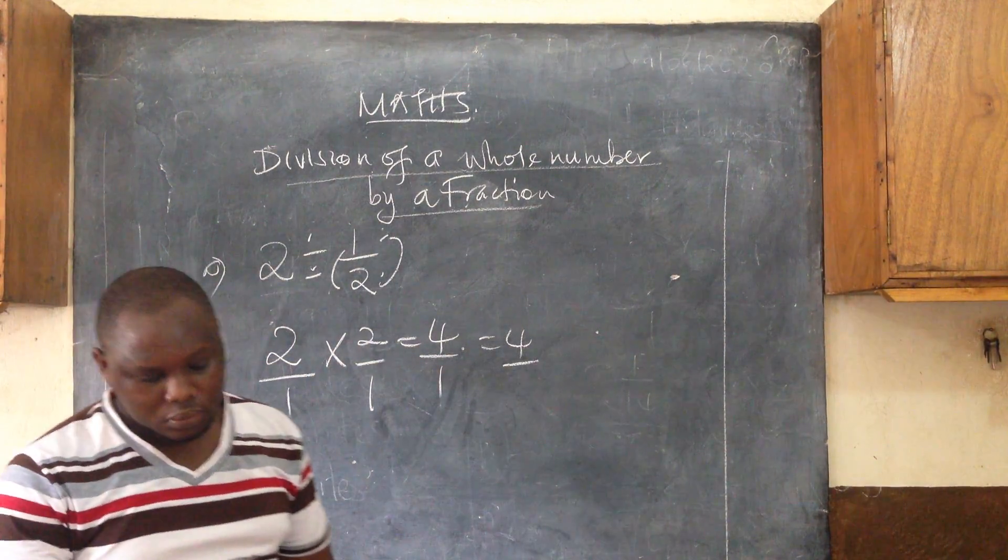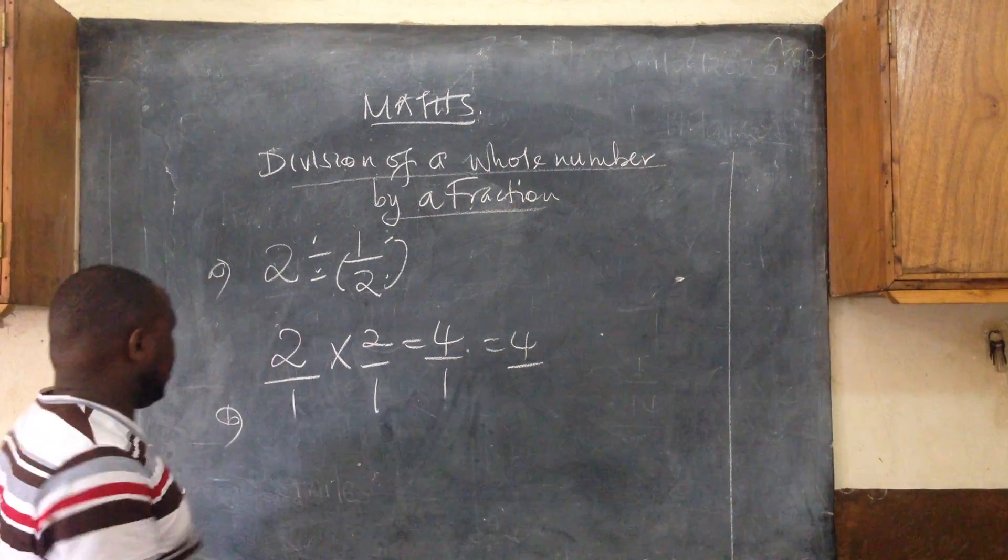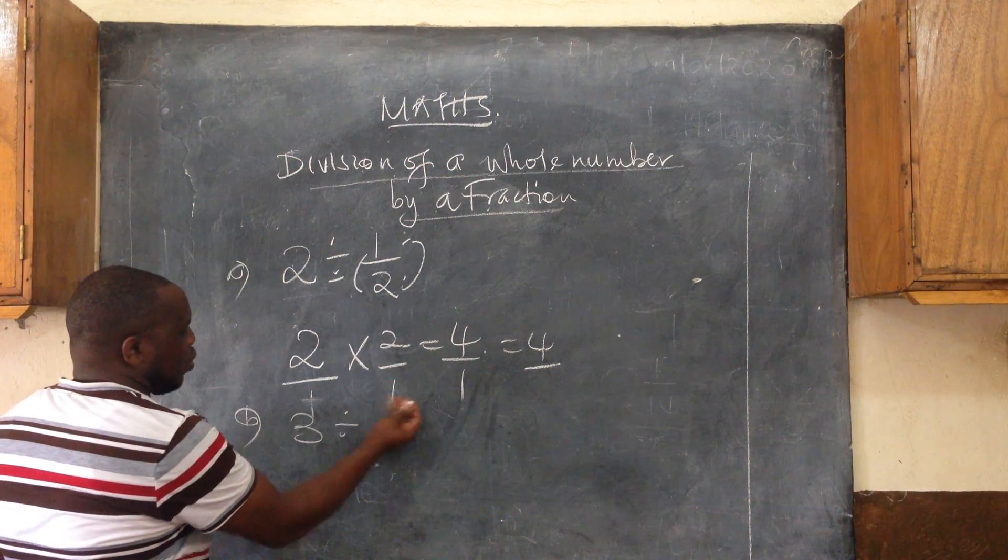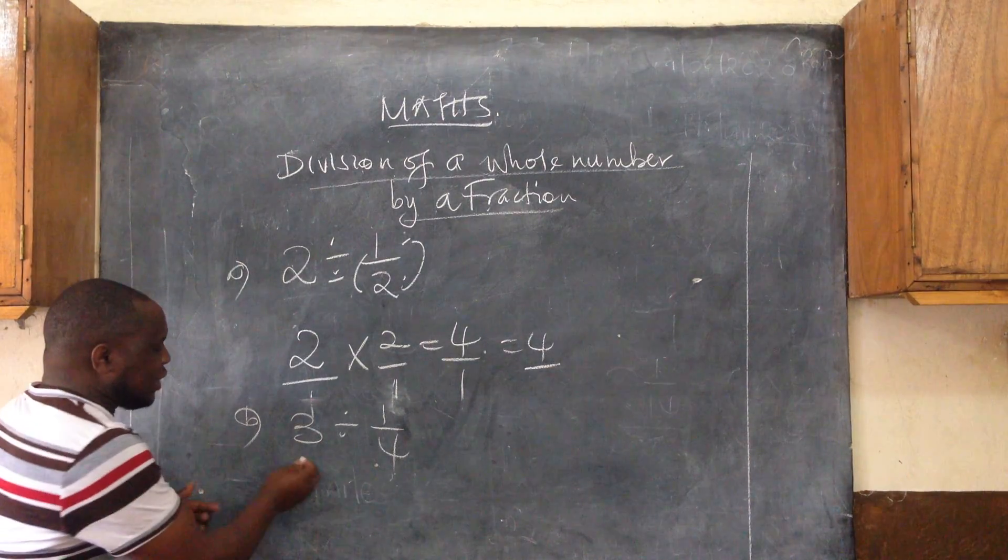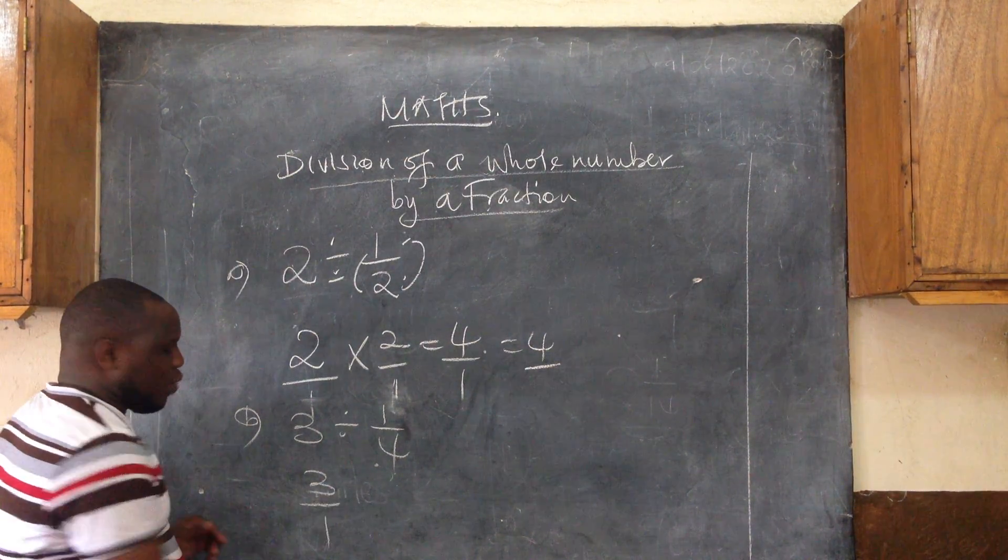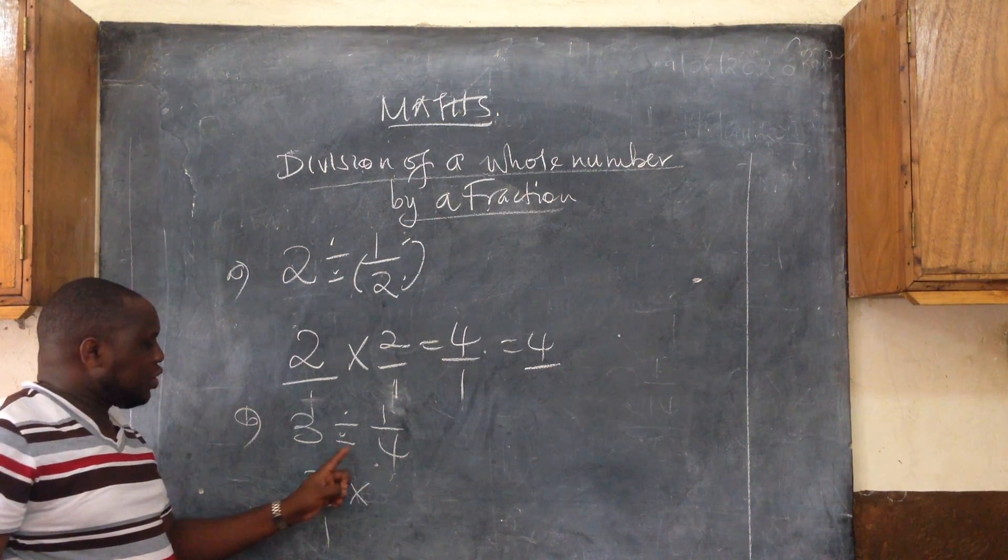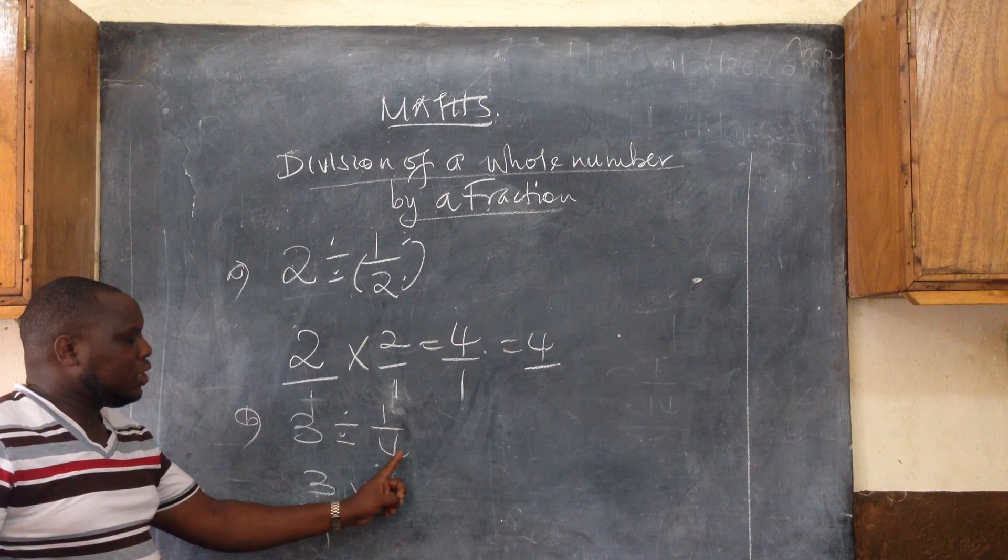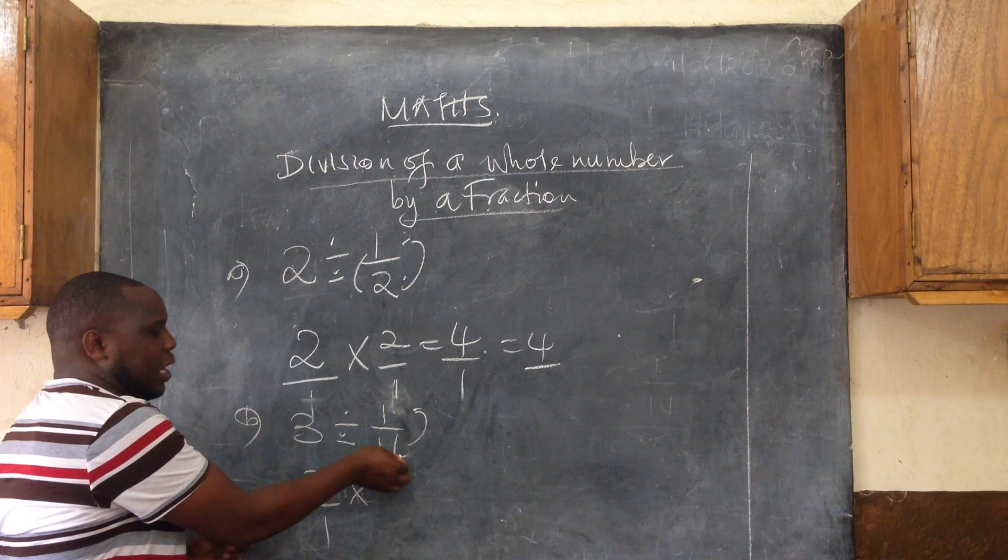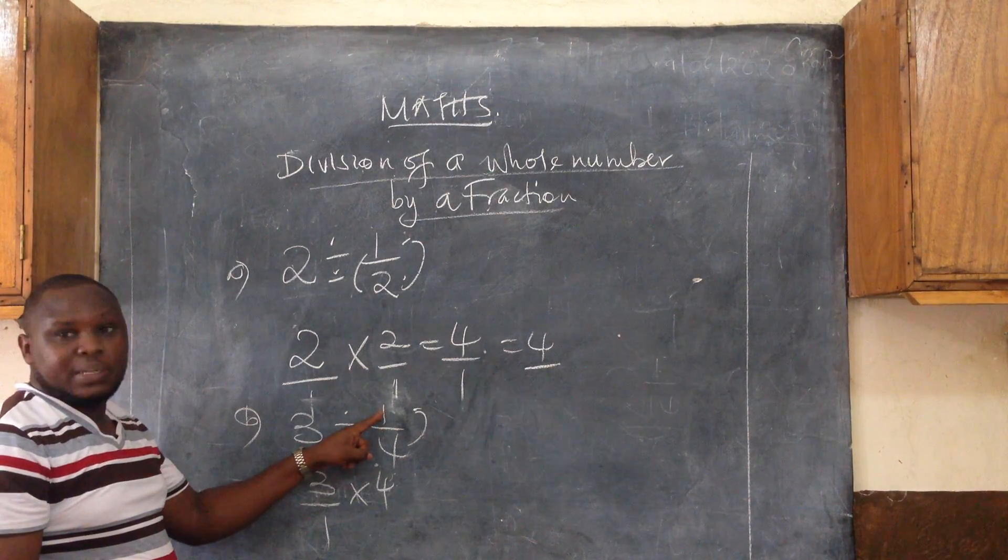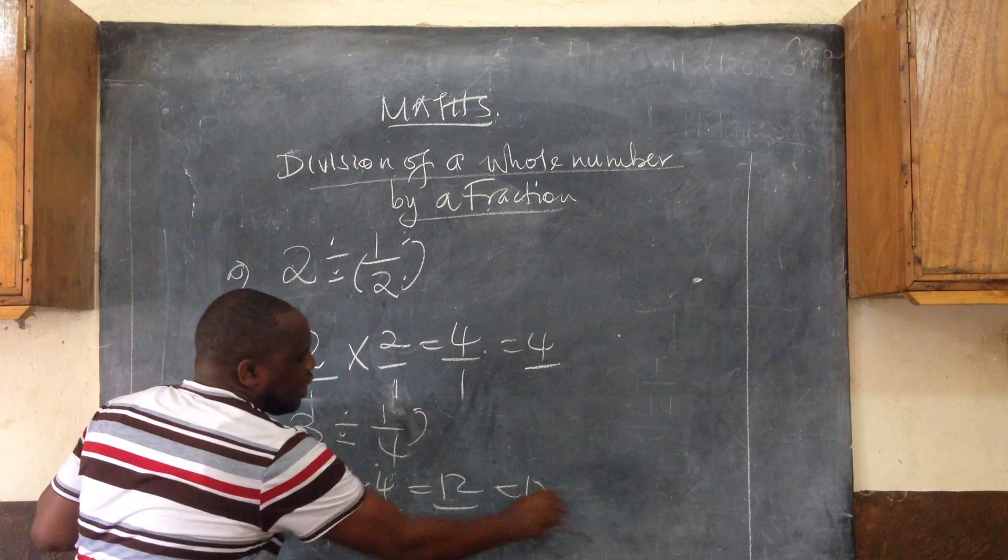Here's a second example: 3 divided by 1/4. In the same case, you first write 3, put it over 1, so that's a numerator and denominator. Then this sign changes to multiplication. Because this sign has changed, we need to change this number into its reciprocal. The reciprocal of 1/4 is 4/1, the denominator becomes the numerator and the numerator becomes the denominator. That gives you 12 over 1, which is simply 12.